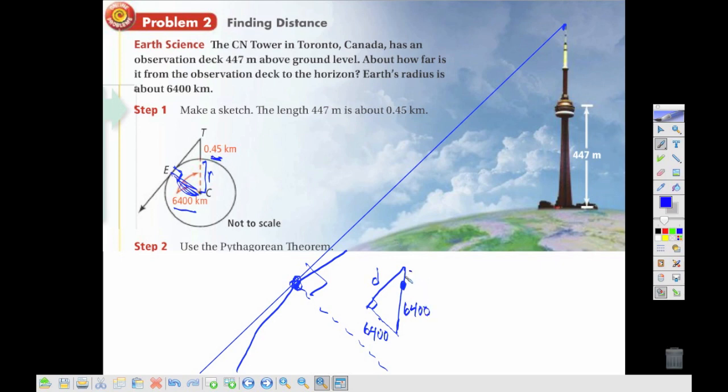Now, this isn't going to be very much, so this isn't to scale, but since this is 0.45 kilometers, this whole side, I would just add that together. And then I would use the Pythagorean theorem to find my distance, D.